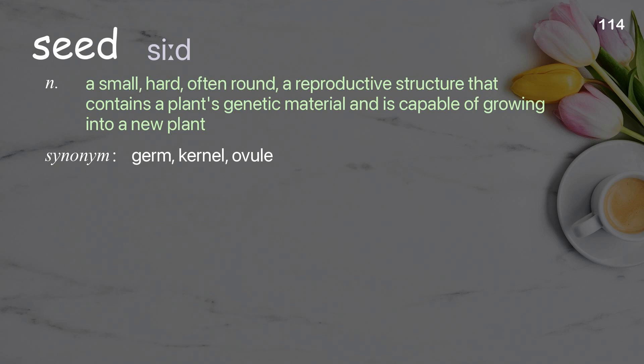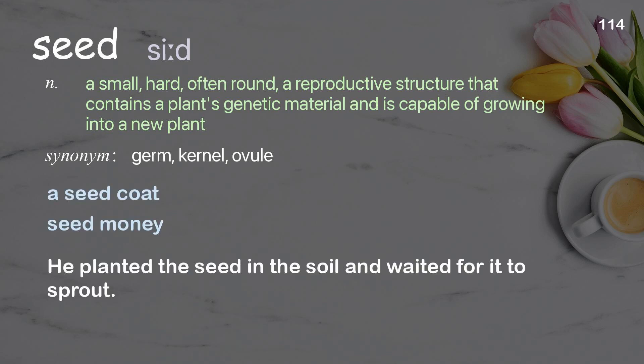Seed: a small, hard, often round reproductive structure that contains a plant's genetic material and is capable of growing into a new plant. Examples: a seed coat, seed money. He planted the seed in the soil and waited for it to sprout.